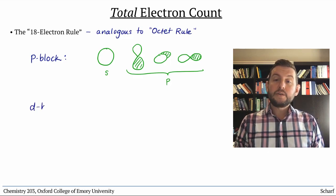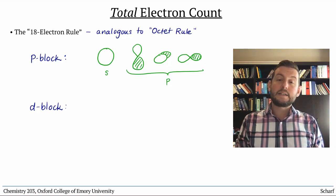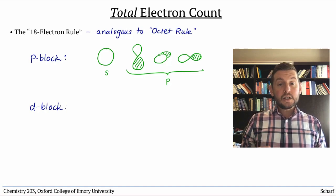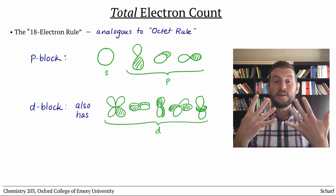The transition metals also tend to be happiest when their valence orbitals are all satisfied. But in addition to their s and p orbitals, they also have d orbitals that can be filled.